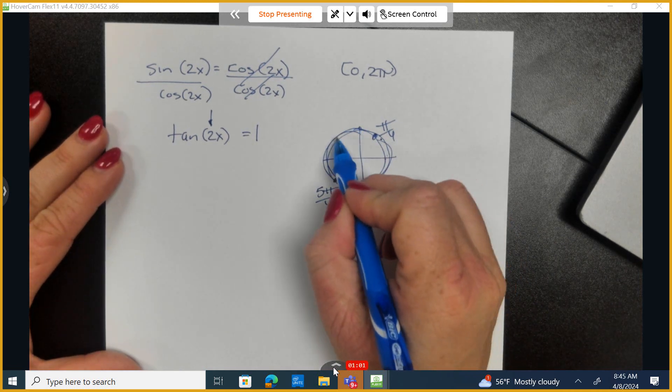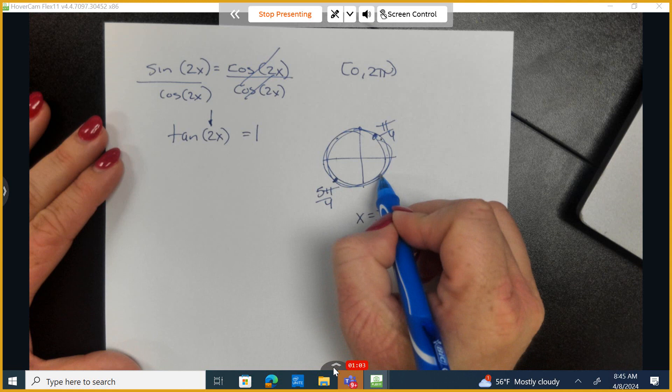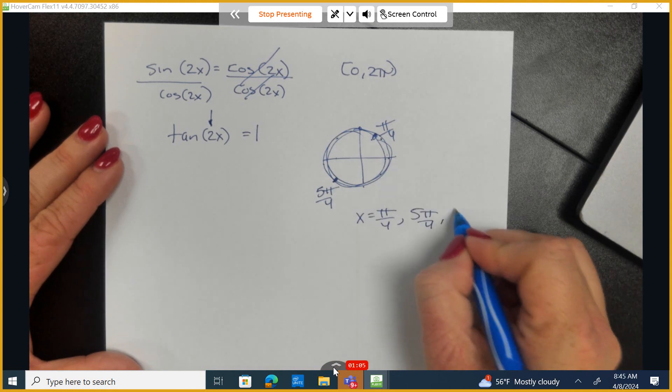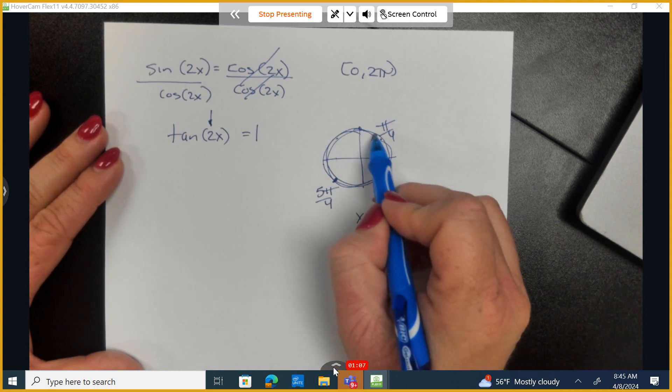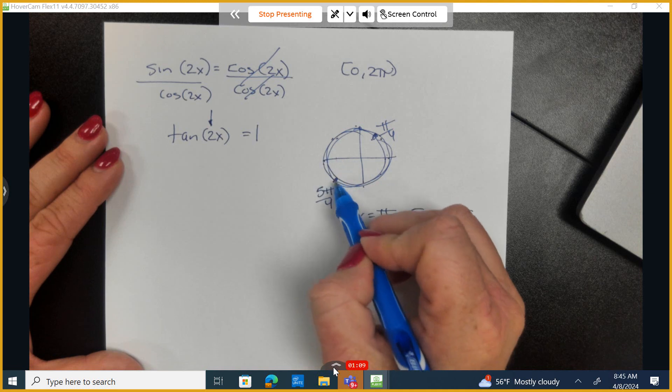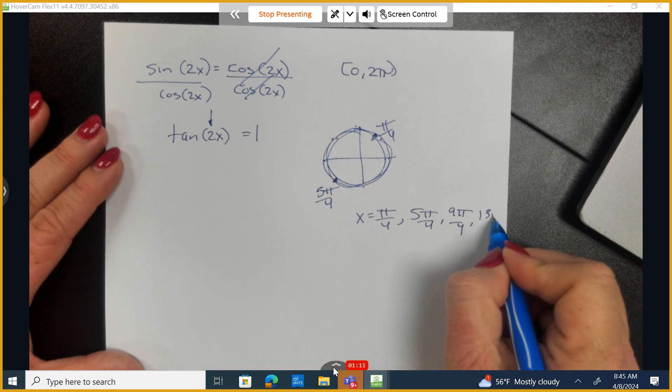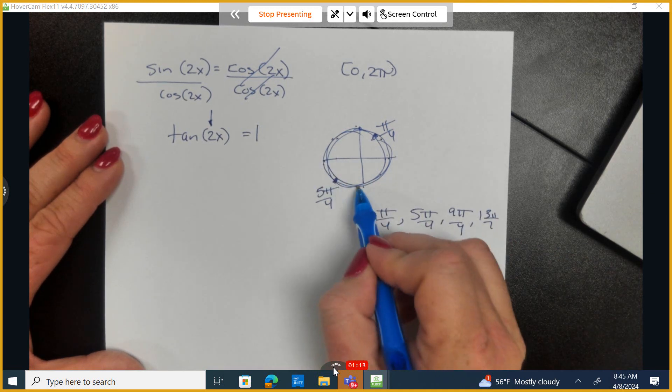So, 1, 2, 3, 4, 5, 6, 7, 8, 9, 9 pi over 4. 9, 10, 11, 12, 13. And let's make sure that's right. 14, 15, 16.